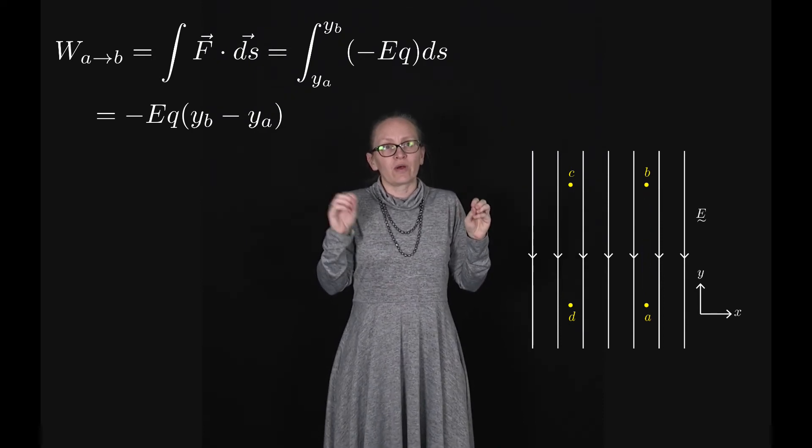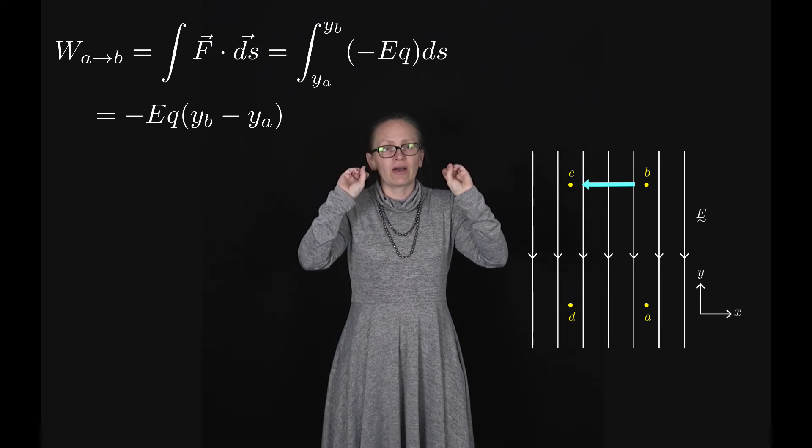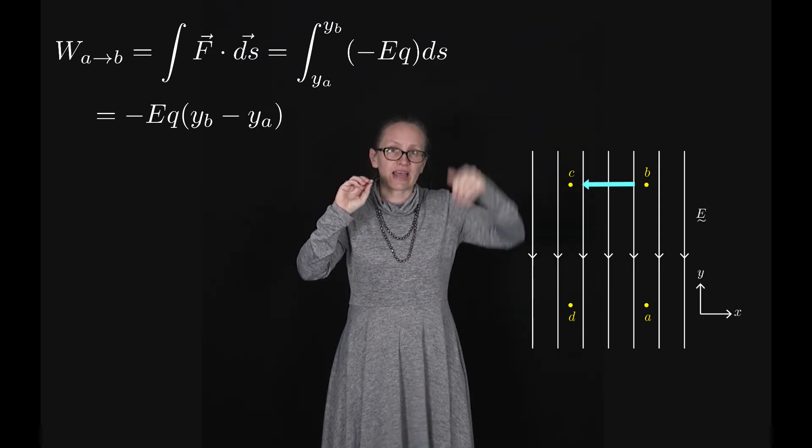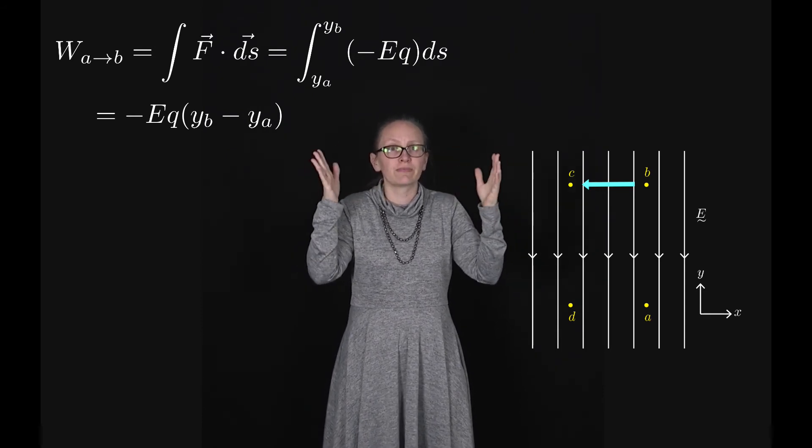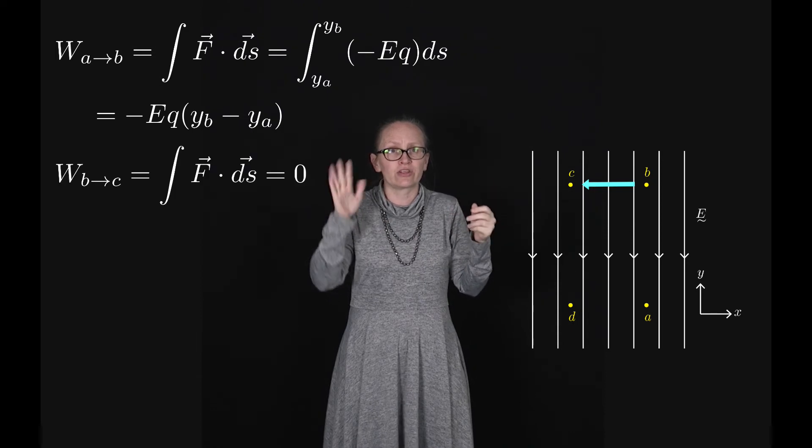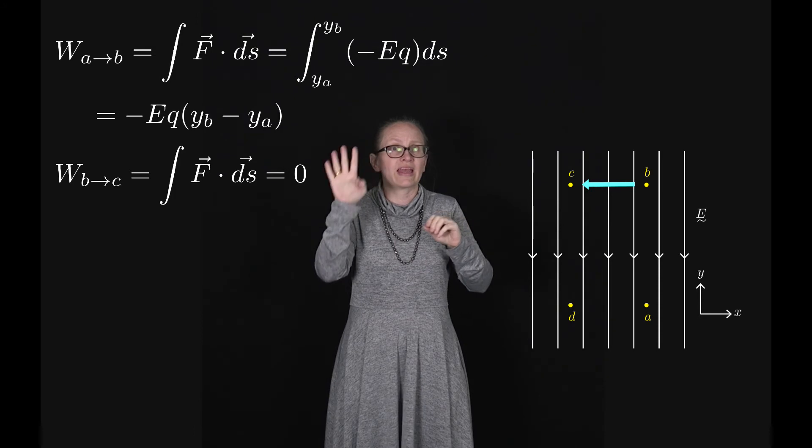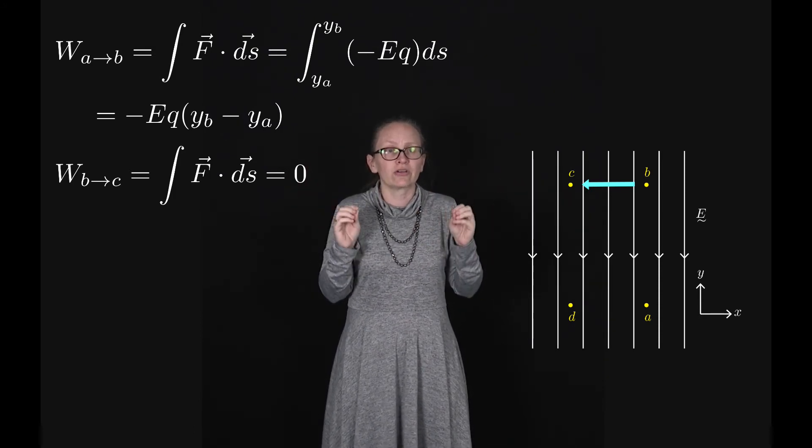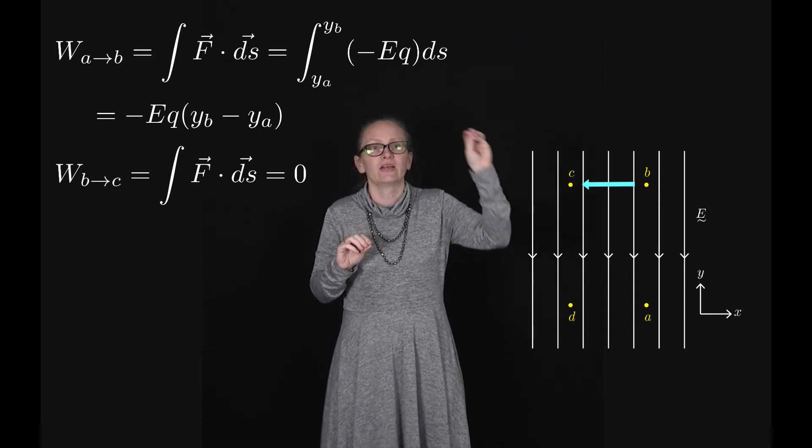Let's now consider the work done by the field as it moves from B to C. Well as it moves from B to C the electric force and the electric field is going down the page while the displacement is going across the page. So these are perpendicular to each other. So using our equation work is equal to the integral of F dot ds. When F and ds are perpendicular to each other this is zero. So we don't need to do any electrostatic work to move it from B to C.